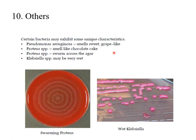Other characteristics are unique to certain types of bacteria. For Pseudomonas aeruginosa, you can smell a sweet grape-like smell from the colonies. Proteus has a unique chocolate cake smell, and also shows a swarming pattern across the agar — when you see this swarming appearance on solid medium, think directly of Proteus species. Klebsiella colonies are characterized by being very wet, mucoid, or sticky-like.